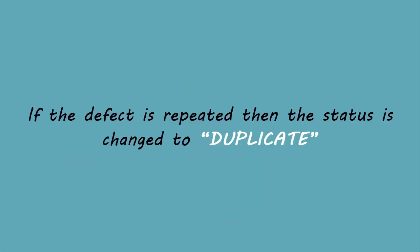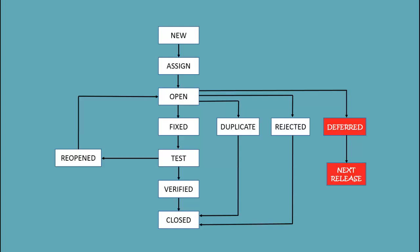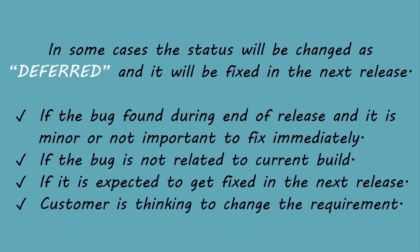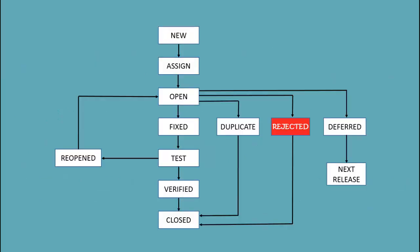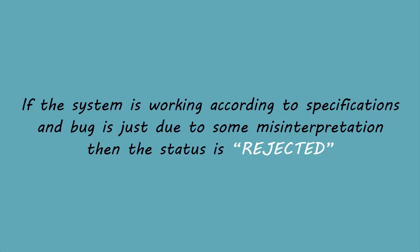Duplicate: if the defect is repeated twice or the defect corresponds to the same concept of the bug, the status is changed to 'duplicate' by the development team. Deferred: in some cases, the project manager or lead may set the bug status as 'deferred' if the bug is found during end of release and the bug is minor or not important to fix immediately, if the bug is not related to the current build, if it is expected to get fixed in the next release, or if the customer is thinking to change the requirement. In such cases, the status will be changed to 'deferred' and it will be fixed in the next release.